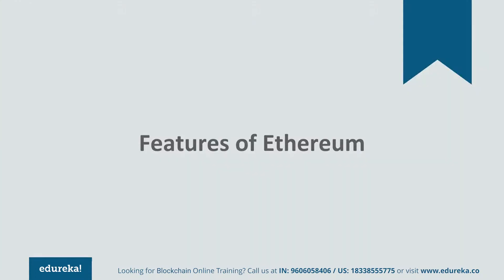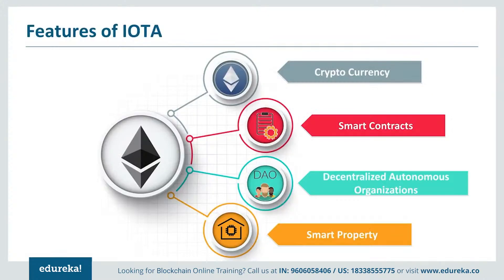Now let's look at the key features which make Ethereum so effective and popular — its four foundational pillars. First, Ethereum is a blockchain-based implementation with its own internal cryptocurrency called Ether. It also introduced smart contracts, which are applications that run on the blockchain. It brought in the idea of a decentralized autonomous organization, and also introduced the concept of smart property, allowing digital transfer of property without the usual hassles of validation.